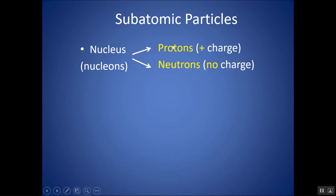Our nucleus contains protons and neutrons. Protons have a positive charge. Neutrons are neutral, or have no charge. Together, we can call them nucleons.